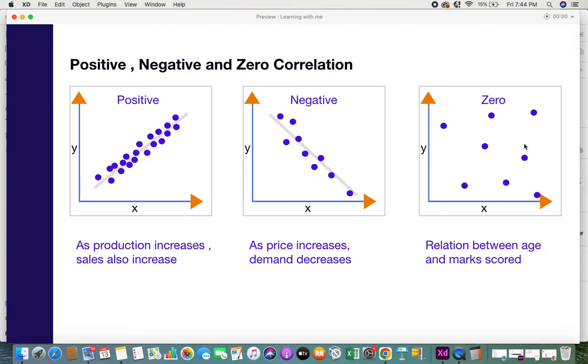When you have correlations like this, it's said to be a zero correlation because there won't be any relationship between two values. So this is about positive, negative, and zero correlation. I hope you got some information on this.